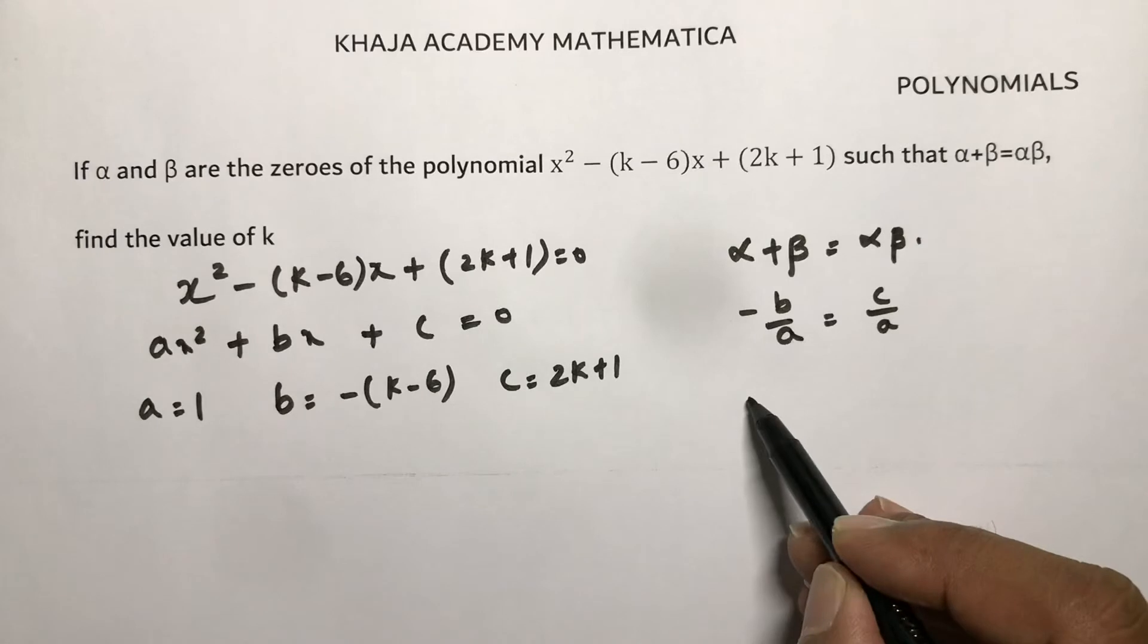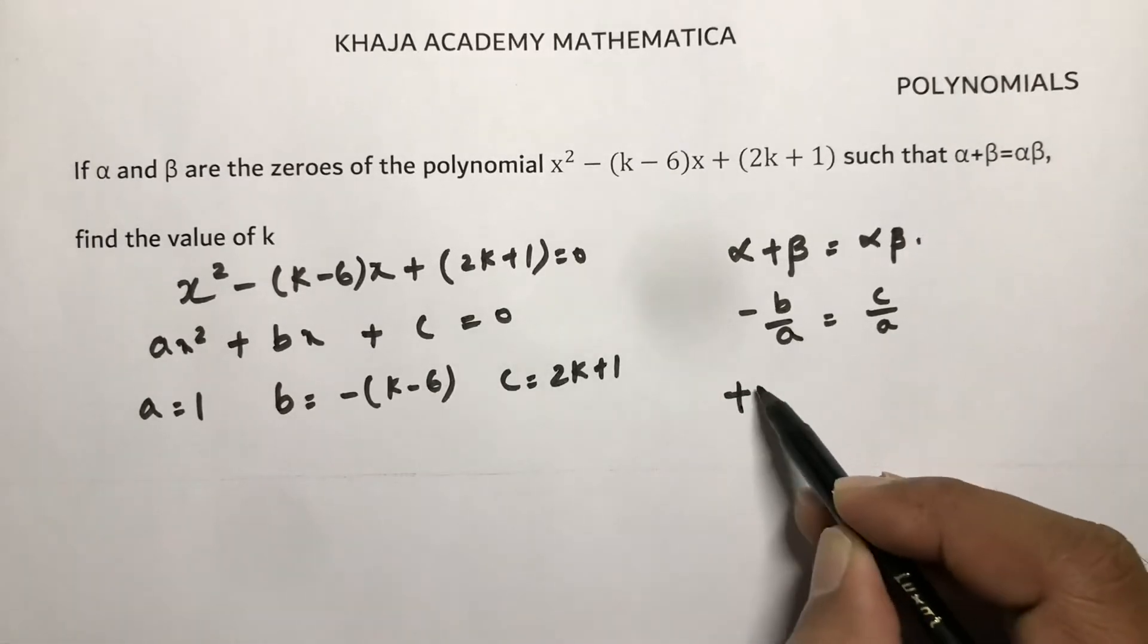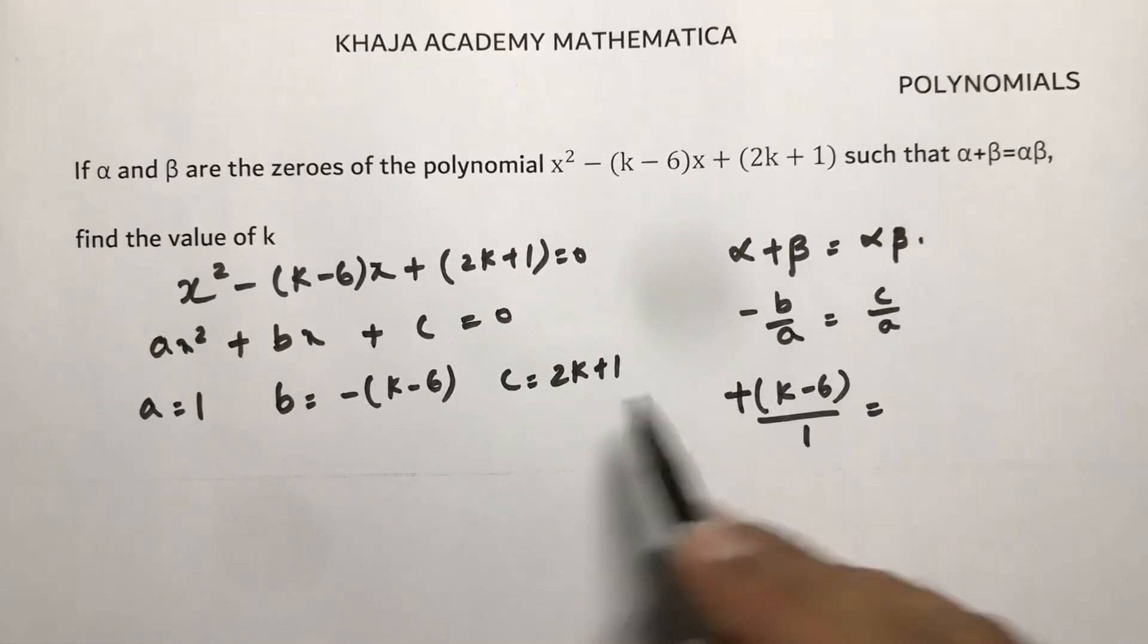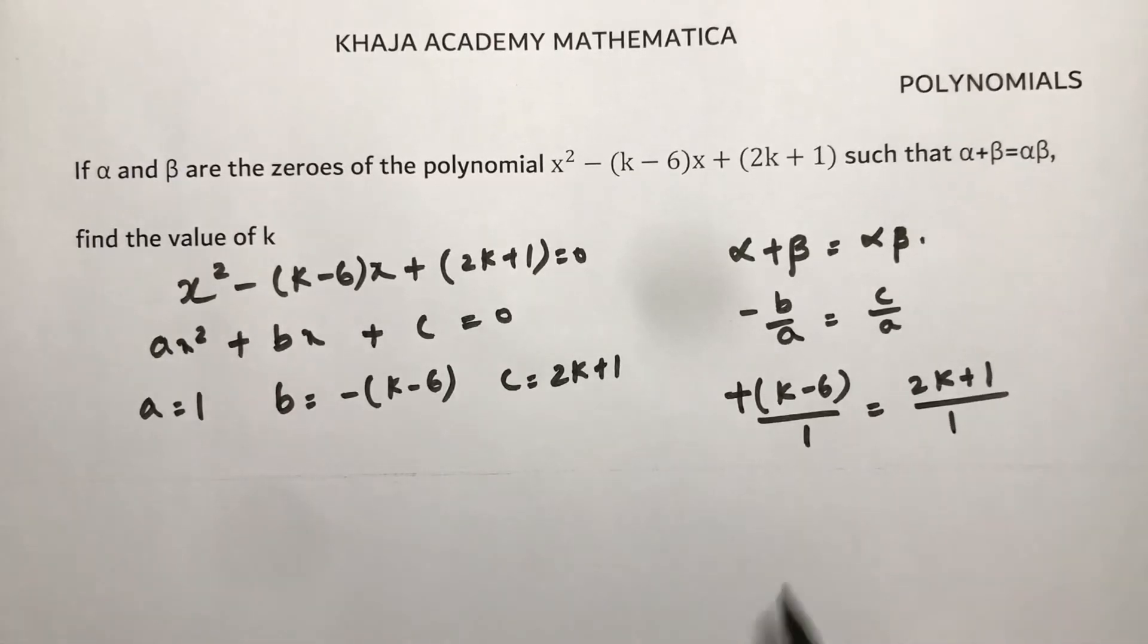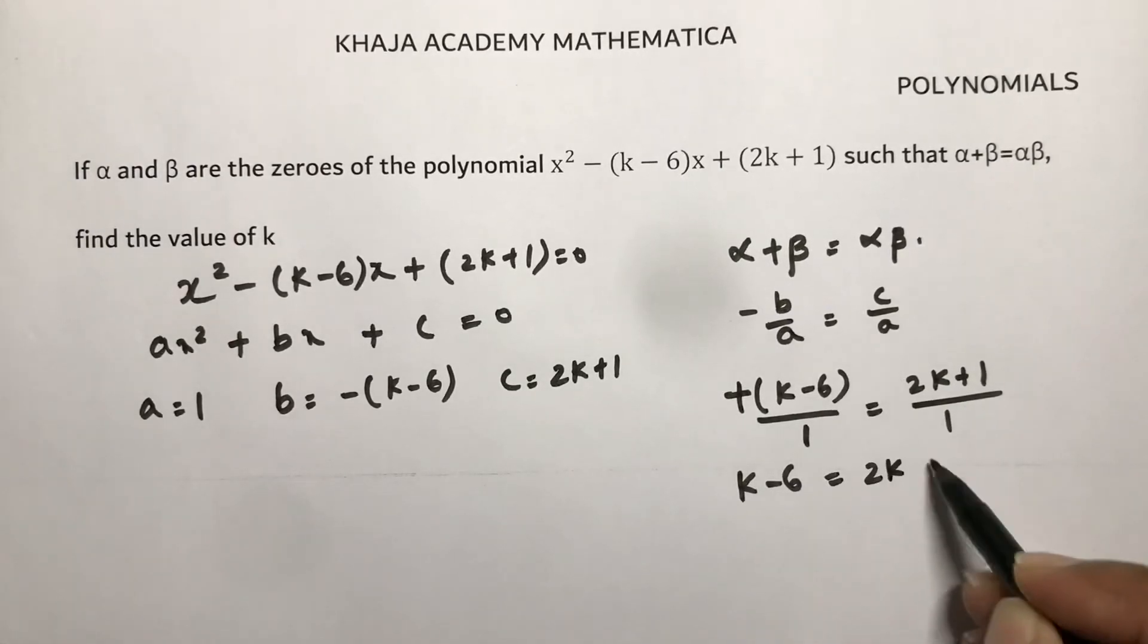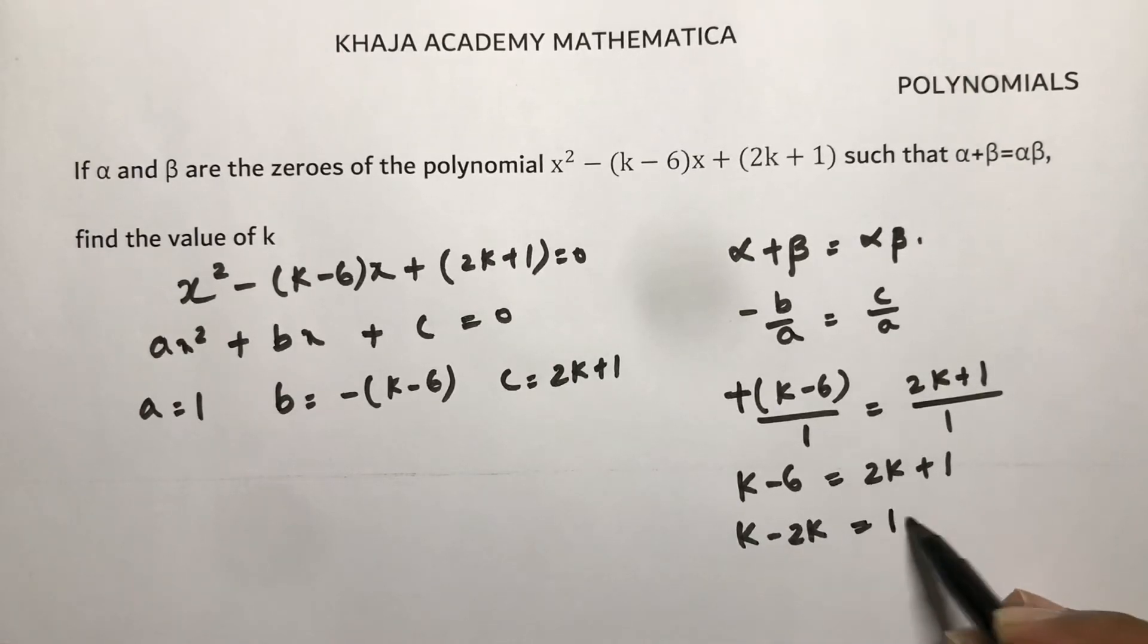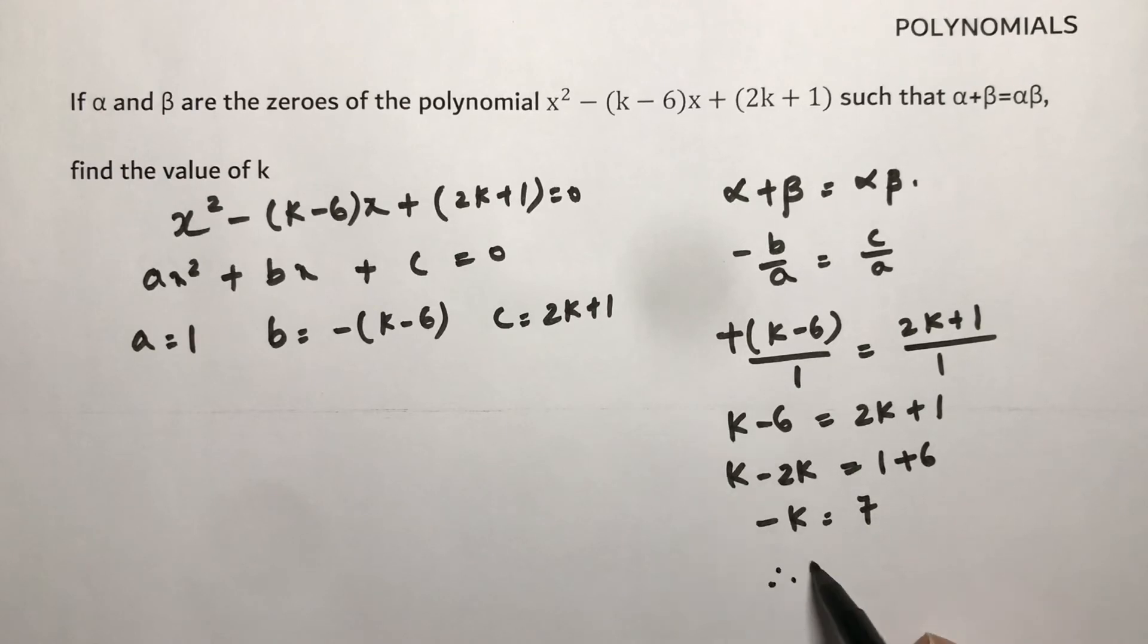If you substitute the values, minus b—b is minus (k minus 6)—so it becomes plus (k minus 6) by a. a is 1. c is 2k plus 1 by a, which is again 1. So k minus 6 equals 2k plus 1, k minus 2k equals 1 plus 6, minus k equals 7, therefore k equals minus 7.